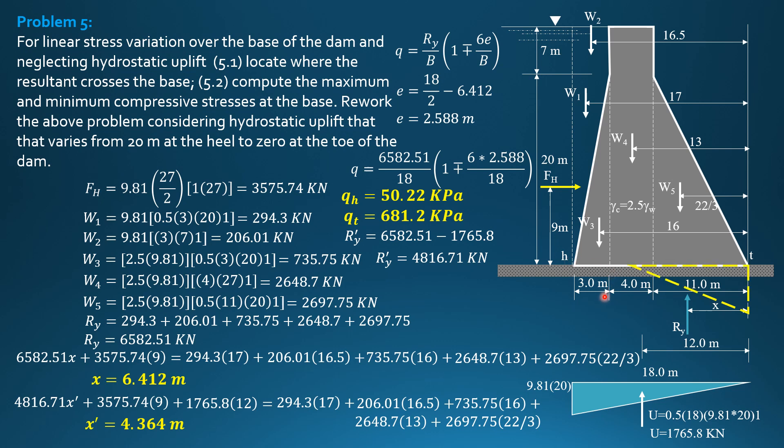So Q-heel is 0. So the pressure diagram is as shown, triangular. Then this is 3 times 4.364, this distance. That's Q-T prime. So Q-heel is 0. This distance is 3 times 4.364, so 13.092.